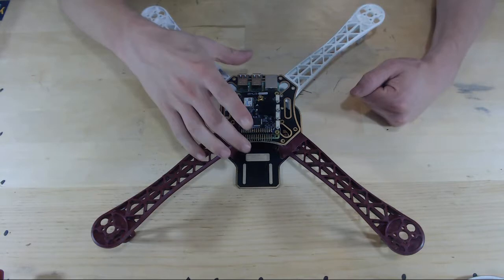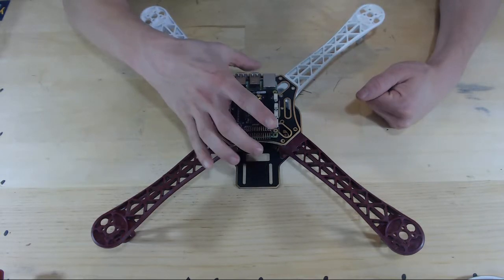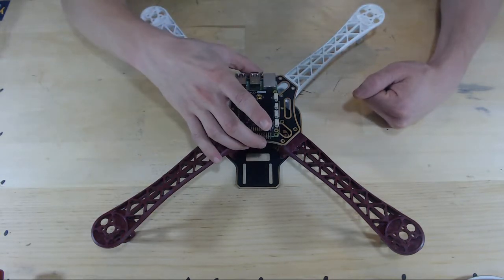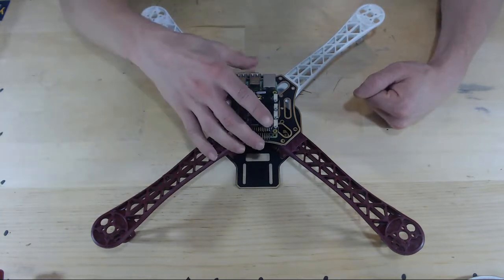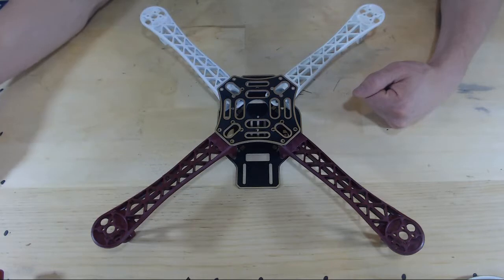We'll want the flight controller to be as close to the center of gravity and mass as possible. That way we don't mess up the IMUs. So now we know the flight controller should be on top.